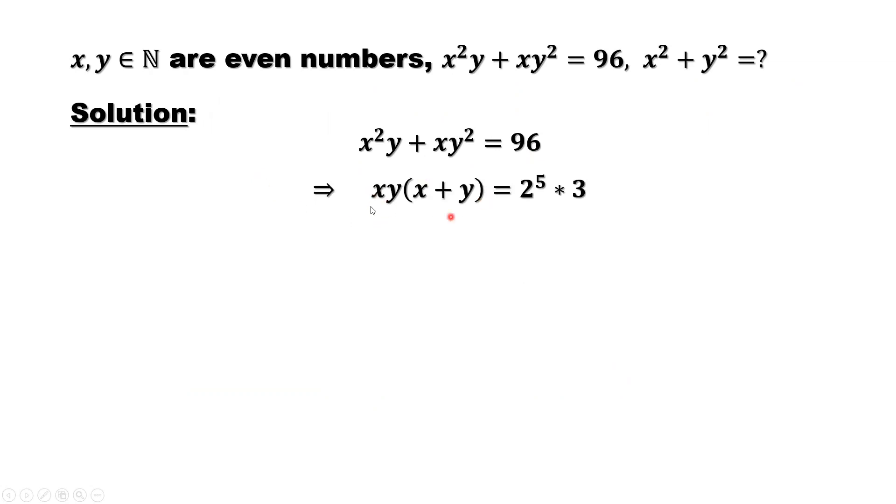This is the left-hand side. x, y is the common factor. We factor it out. The inside is x plus y. The right-hand side, the prime number decomposition is 2 to the power of 5 times 3.